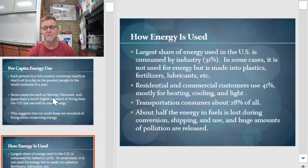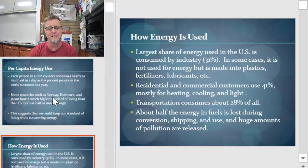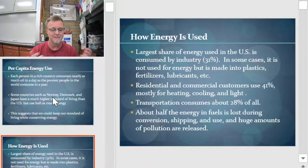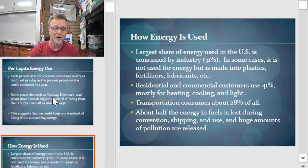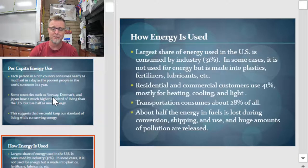If you think about how energy is used, the largest share of energy in the US is consumed by industry — about 31%. In some cases it's not used for energy, but is made into plastics, fertilizers, lubricants, and things like that. Residential and commercial customers use another 41%, and transportation uses 28%. About half the energy and fuel is actually lost during conversion, shipping, and use — so we're missing out on a huge amount of energy that could be doing work. It's just lost as heat or pollution.